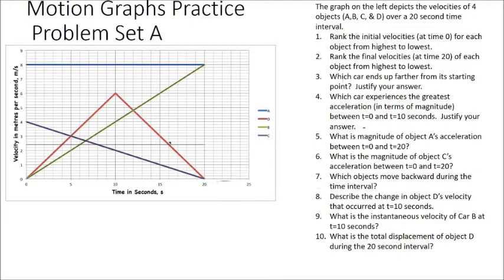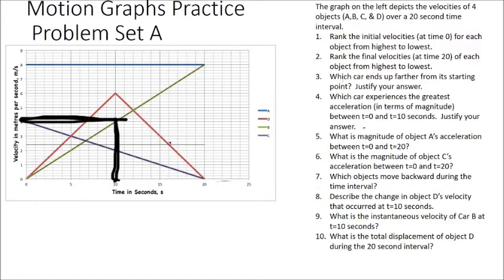Question 9 asks for the instantaneous velocity of car B at 10 seconds. When you have a velocity-time graph and want to find an instantaneous velocity, you simply read it off the y-axis. Going over to 10 seconds and up to where it intersects line B, then following that over to the y-axis, our answer is 4 meters per second. The exact speed at 10 seconds for object B is 4 meters per second.